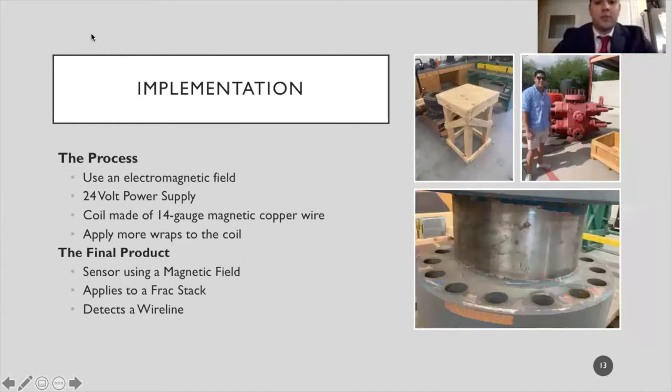For our team to design and create a sensor that will detect wireline inside a FRAC stack, we came up with the idea of using an electromagnetic field. Our sensor will be connected to a 24 volt power supply, and the power supply will be connected to 14 gauge magnetic copper wire that is wrapped around our metal spool and encased with an aluminum sheet. Based on the diameter of the FRAC stack, if needed, you can apply more wraps to the coil. That will increase the strength of the electromagnetic field.